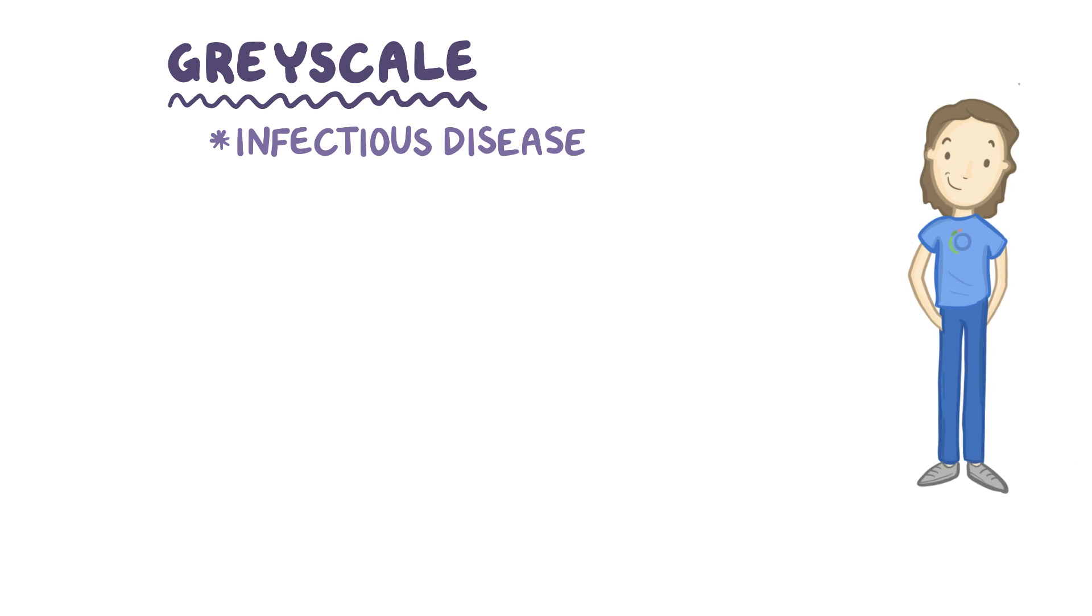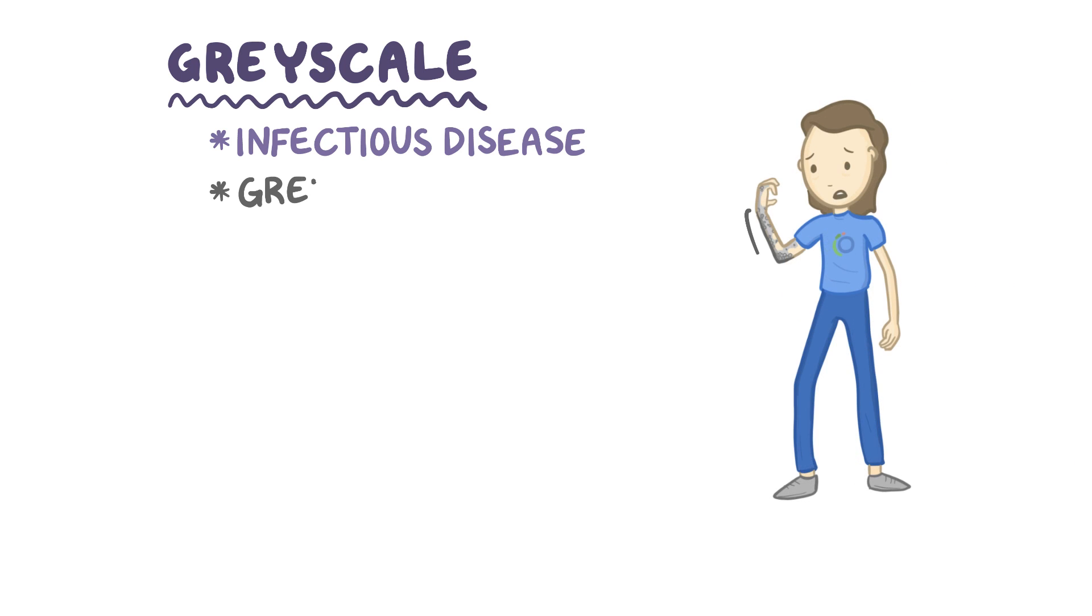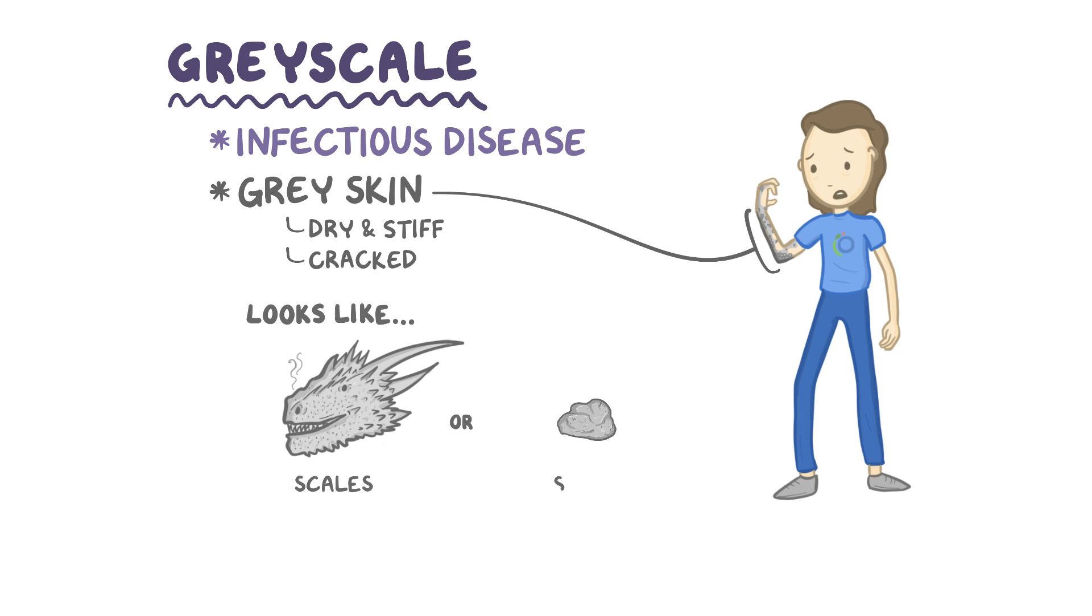Grayscale is an infectious disease where the affected areas of the skin take on a grayish color and often become dry and stiff, which results in cracks that look like dragon scales or stone.